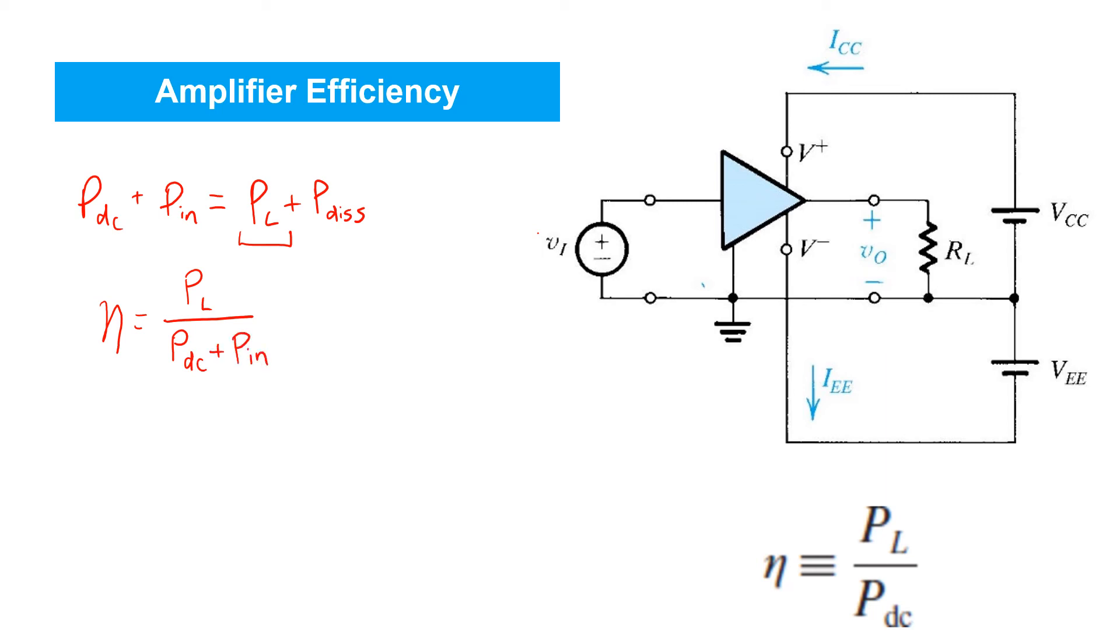Now, if the amplifier has a large amount of power gain, then we can expect that the power delivered to load is a lot bigger than the input power from the source VI. And so when that's the case, it must be true that the vast majority of the input power is coming from the power supplies. That is, PDC is much bigger than PIN.